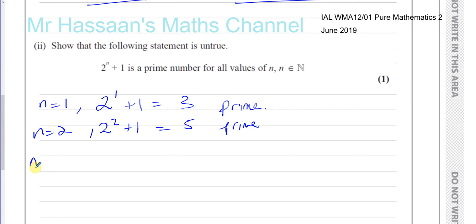And when n equals 3, you have 2 to the power of 3, plus 1, which is 8 plus 1, which is 9, which is not prime. So here we have our counter-example. So therefore...